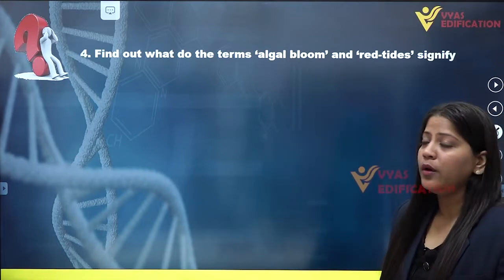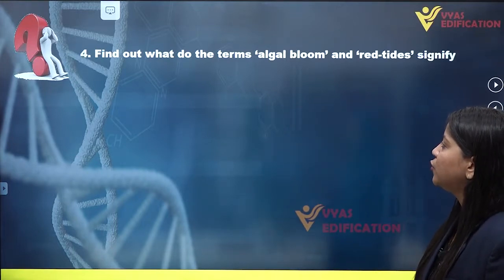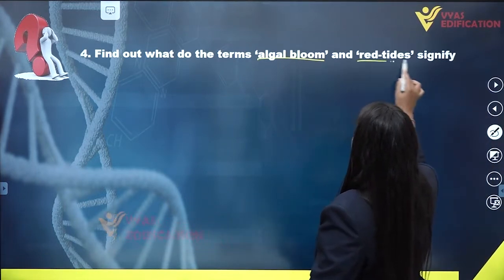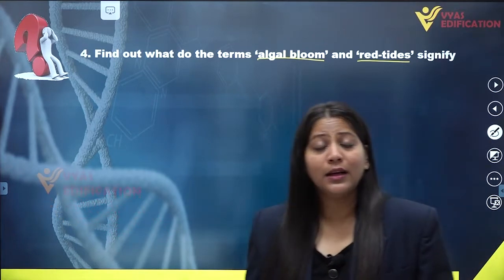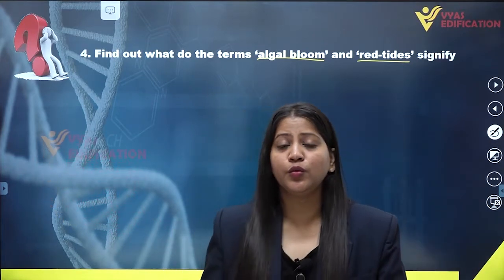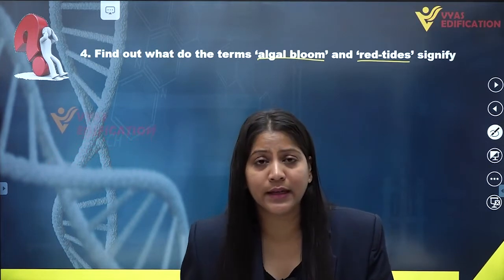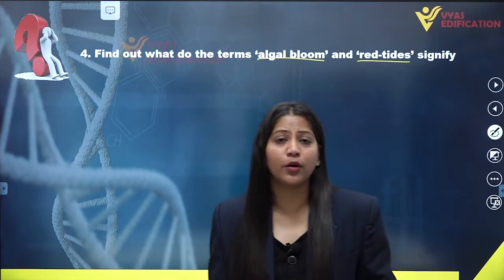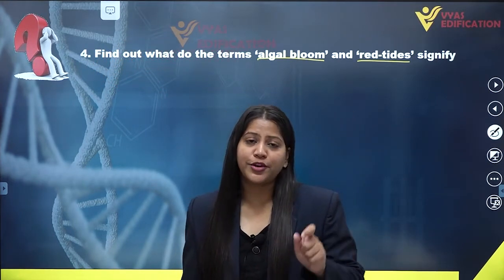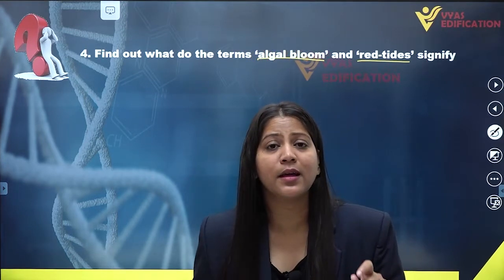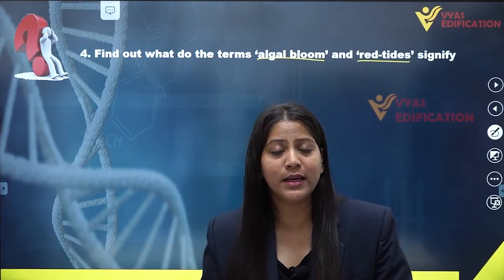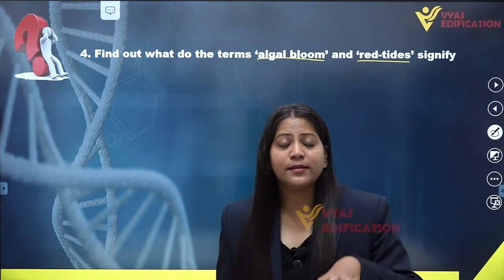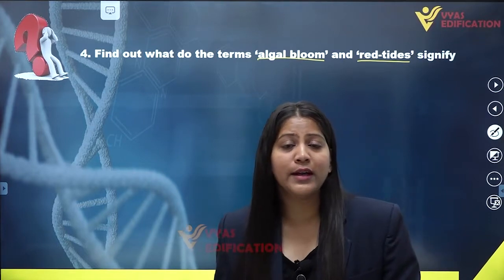Now we are going to discuss question number four: find out what the terms algal bloom and red tides signify. First, we are going to talk about algal bloom. Algal bloom refers to the increase in number of algae or blue-green algae, that is cyanobacteria, in water.